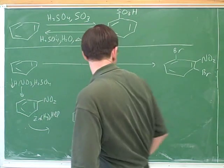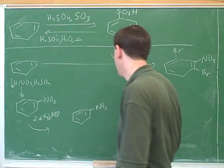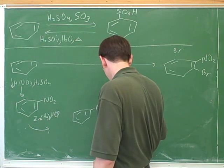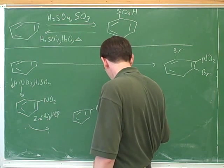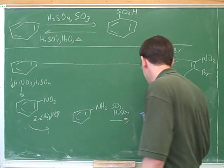Before we do anything, we need to make this into an ortho para director because that's where we want the halogens. And then you can add the H2SO4. Right. And what's the purpose of that? To block the para position. Very good. Because we only want the bromines to add in the ortho position, not the para position.